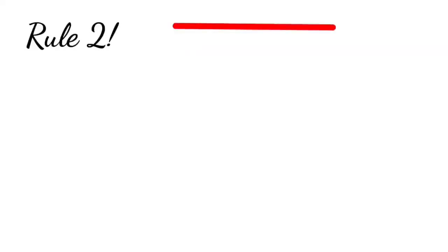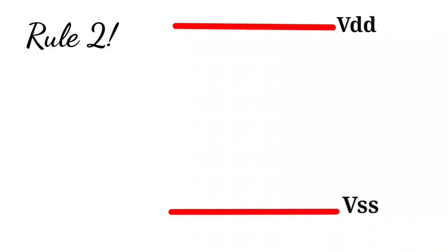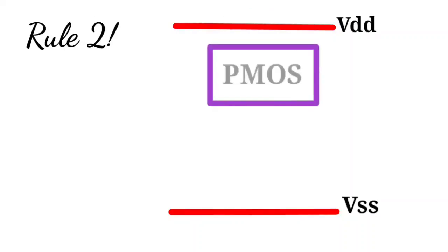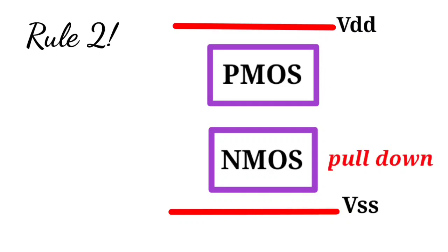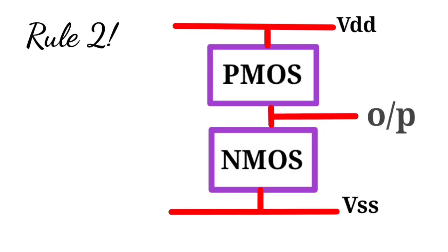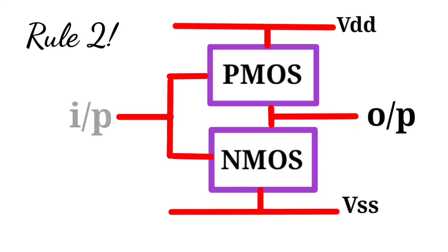Rule number two: any CMOS network will have a topology like this. On the top you will have a power rail carrying supply voltage VDD, and at the bottom a ground rail at potential VSS. Between these two we have two networks: a PMOS network near the power rail, also known as the pull-up network, and an NMOS network near the ground rail, known as the pull-down network. The source of the NMOS network is connected to the ground rail, and the source of the PMOS network to the power rail. The drain of PMOS and NMOS are connected together, and you take the output from this junction. Inputs are given at the gates of NMOS and PMOS transistors.